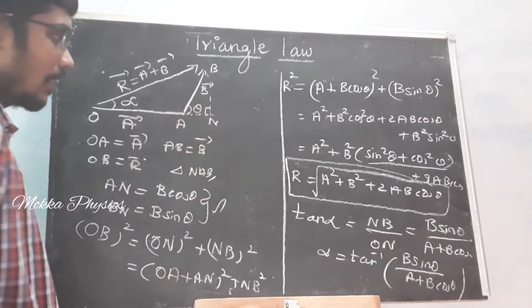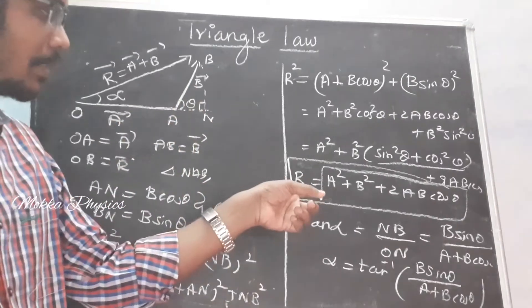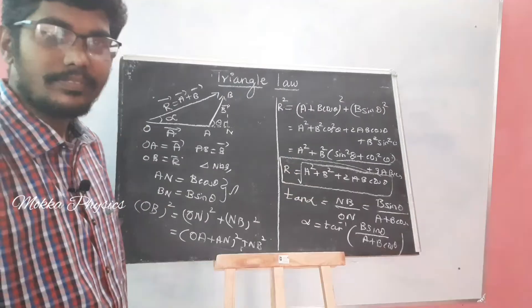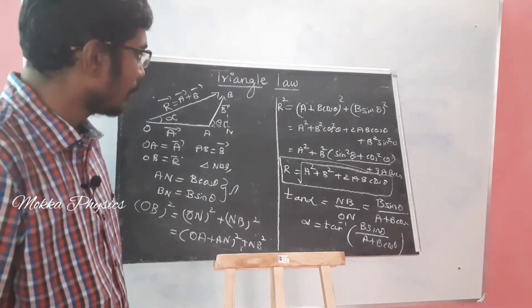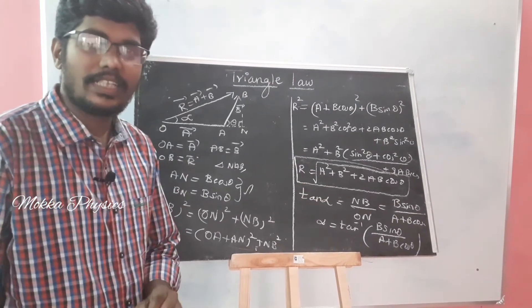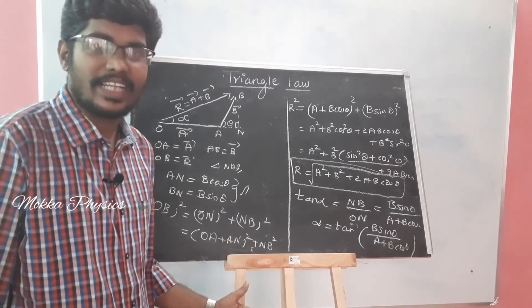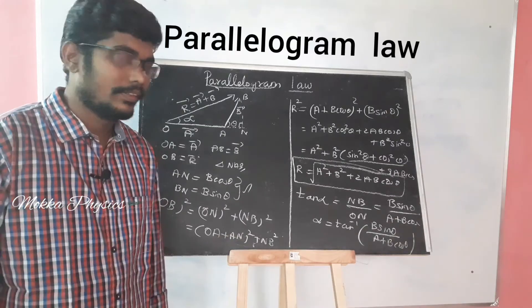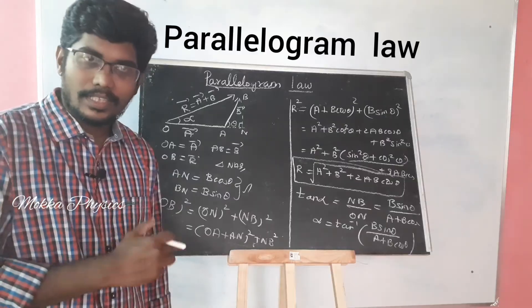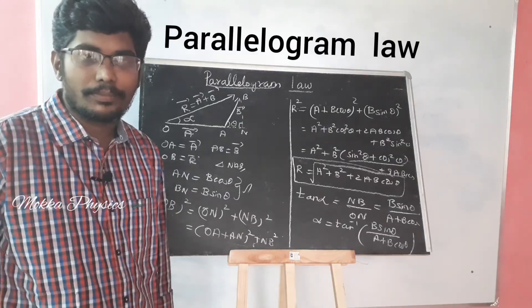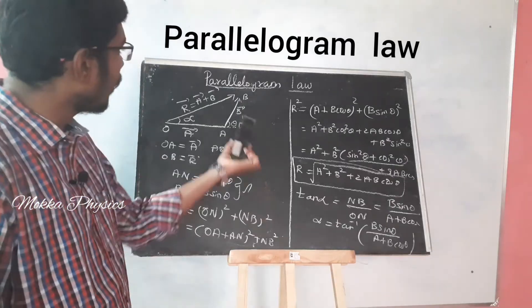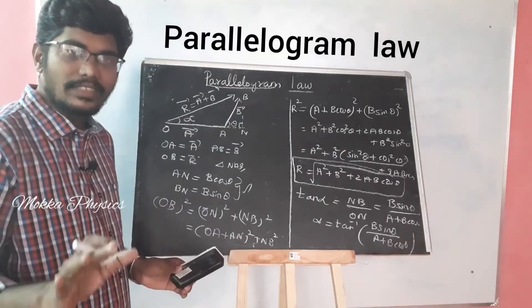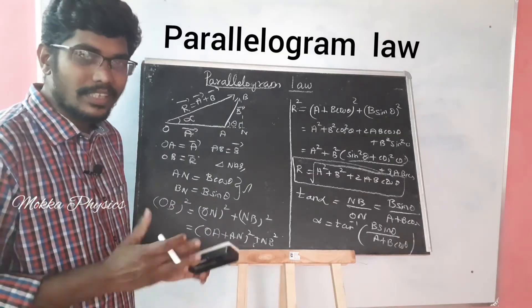So, the addition of vectors gives us the resultant formula, and we also find the direction of the resultant. Now I'm going to do this in another aspect — it's called the Parallelogram Law. In the Parallelogram Law, vector addition is dealt with in a different style.